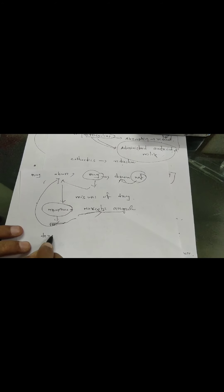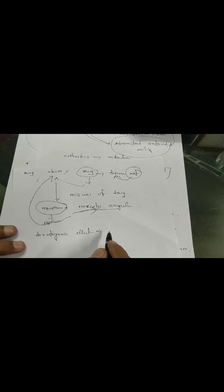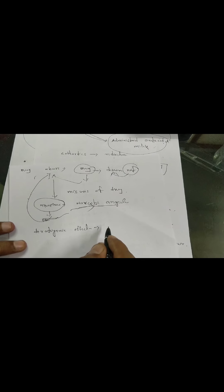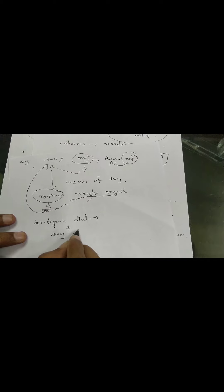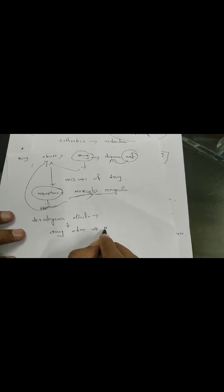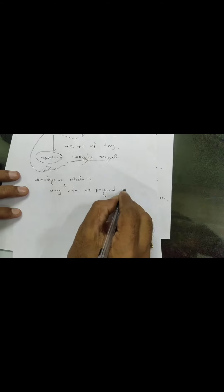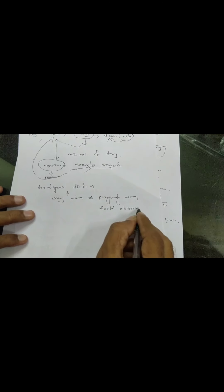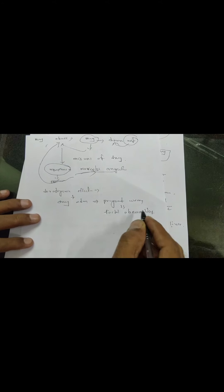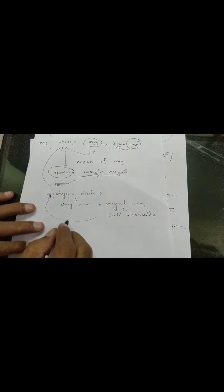Teratogenicity of drug: some drugs administered to a pregnant woman produce fetal abnormalities. Drug administered in pregnancy can cause fatal abnormalities — that is called teratogenic effects.